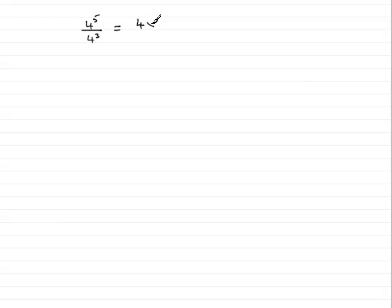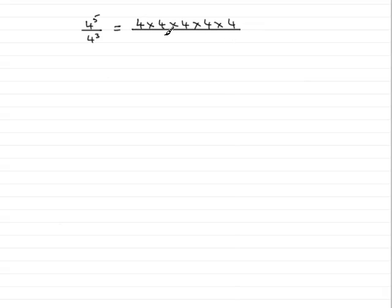Well, 4 to the power 5 is 4 multiplied by 4 multiplied by 4 multiplied by 4 — 4 repeatedly multiplied by itself 5 times over. And 4 cubed is 4 times 4 times 4.